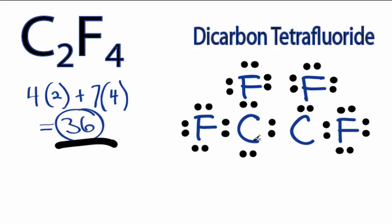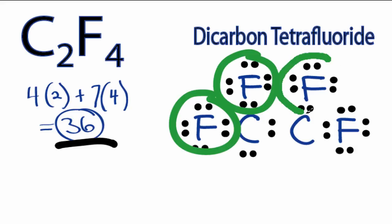Let's see if we have octets for each of the atoms. Fluorine needs 8 valence electrons, and each of the fluorines has 8 valence electrons, so its outer shell is full.